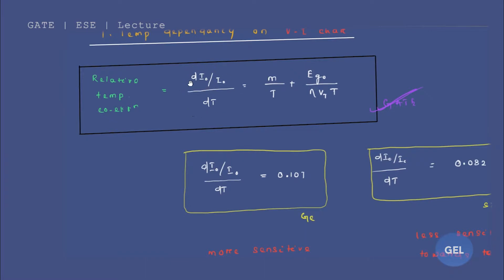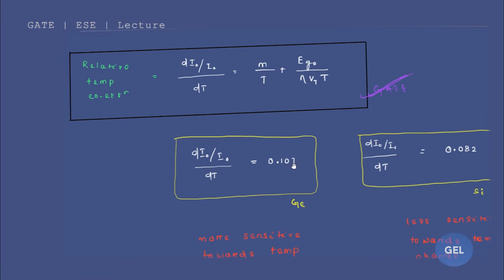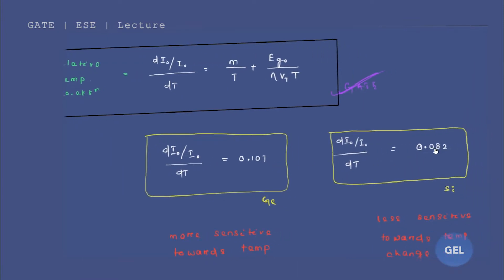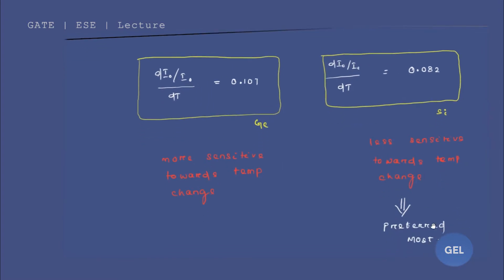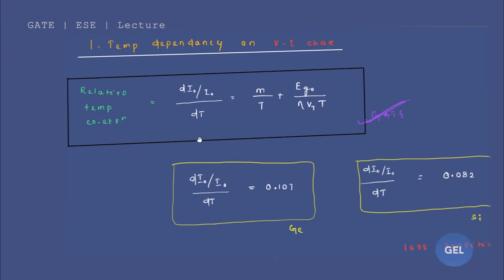The relative temperature coefficient value for germanium is 0.10, and in case of silicon this value is 0.08. If you put the desired values for germanium you will get 0.107, and for silicon you will get 0.082. Now you can see silicon has less sensitivity towards temperature change, while germanium is more sensitive. That means silicon should be preferred because it is less sensitive towards temperature change. Silicon is preferred most — please remember this point.